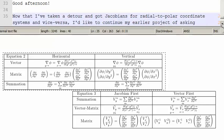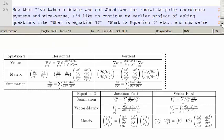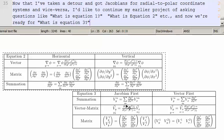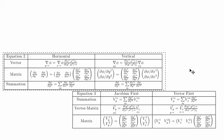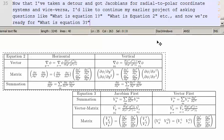Good afternoon. Now that I've taken a detour and got Jacobians for radial to polar coordinate systems and vice versa, I'd like to continue my earlier project of asking questions like, what is equation 1? What is equation 2? And now we're ready for what is equation 3?